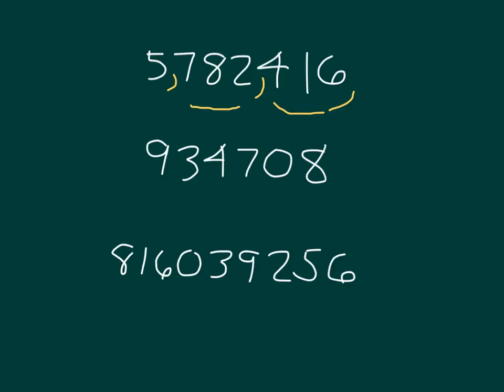Let's look at the next number. Let's place our commas — how many commas do we need? Can you write it out on a piece of paper? Did you place one comma? How many thousands are in this number? Did you answer that there are nine hundred thirty-four thousands in this number?